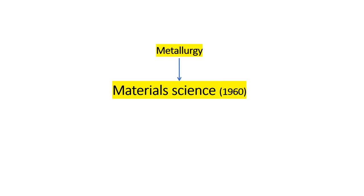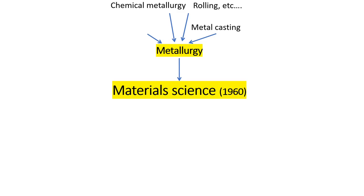Material science has three pillars. The first one is metallurgy, particularly chemical metallurgy, which is the science or art of making metals from ores. Then we have rolling and other techniques to shape solid metals, but we can also shape metals through the liquid state using metal casting, and obviously without combustion metallurgy would not exist.